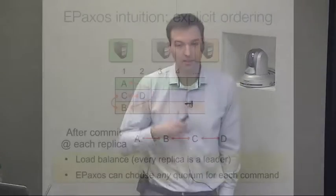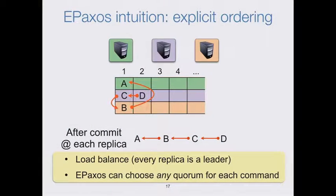The key takeaways with ePaxos: we get load balancing because all replicas are command leaders simultaneously. Very importantly, ePaxos has the flexibility to choose any quorum of replicas to commit a command to — there's no single special replica on the critical path for every decision, and no need to get information from every replica. However, this introduces the problem of establishing ordering constraints, which could potentially be O(n²).